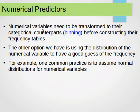If we have numerical variables, we can use binning to transform them into categorical variables so we can build our frequency tables. Or the other option is to basically use the distribution of the numerical variables to have a good guess of the frequency. Notice, we deal with them one variable at a time, because we need to build a frequency table for each variable at a time against the class.